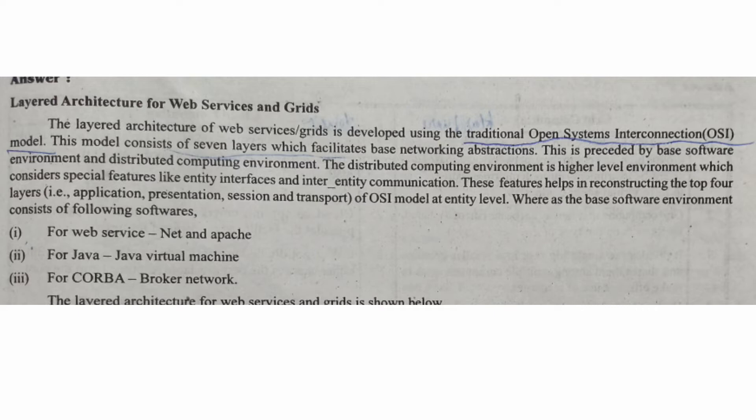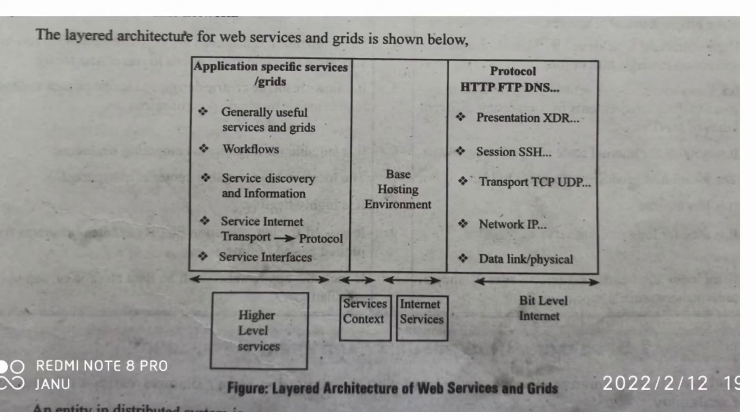The layered architecture of web services and grids is used as a traditional OSI model with 7 layers of base networking. We can choose a distributed computing environment with special features like entity interface and inter-entity communication. The top 4 application layers sit above the base software layers including web service Netend Apache, Java, Java Virtual Machine, and CORBA network. In the diagram, data link and physical layers, service interfaces, Network/IP, Internet Transport Protocol, Service Discovery and Information Session, and generally useful services and grids are all present in the presentation layer.